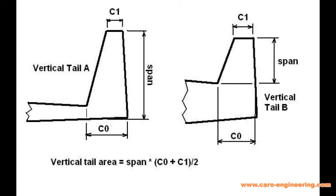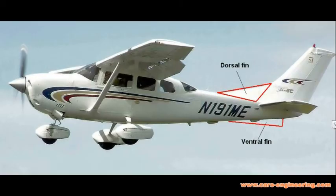Directional stability is not just a factor of the vertical tail area after the CG. Any side area in front of the CG influences it as well, in a negative, destabilizing way. This needs to be considered when sizing the vertical tail.